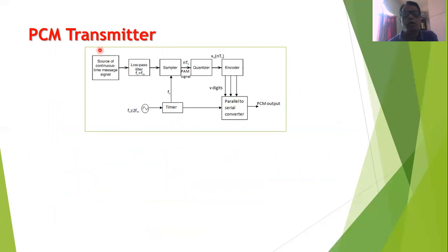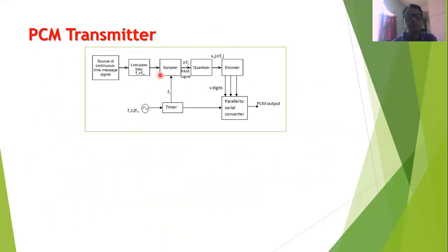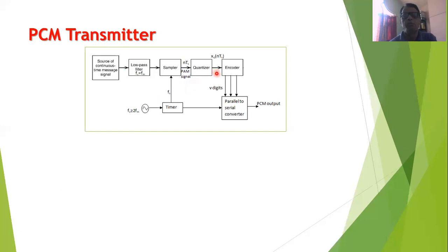Now let us understand the block diagram of the PCM transmitter. The first block is the source of the message signal, connected to a low pass filter with cutoff frequency equal to the modulating signal frequency. The output of the low pass filter is connected to a sampler circuit, which also receives the sampling signal FS. FS is kept greater than or equal to twice FM to satisfy the sampling theorem. The output of the sampler is a PAM signal connected to the quantizer, whose output feeds the encoder, and the encoder's output goes to a parallel-to-serial converter to produce the final PCM output.